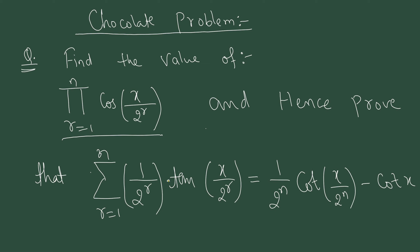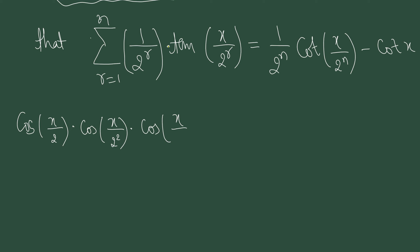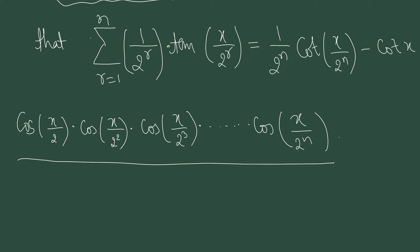First, let us find the value of this product. If we expand what is written, it becomes: cos(x/2) × cos(x/2²) × cos(x/2³) × ... × cos(x/2^n). We need to calculate the value of this. Many people will notice that the angles inside cos are written in a GP (geometric progression), and we need the product of cosines whose angles are in GP.